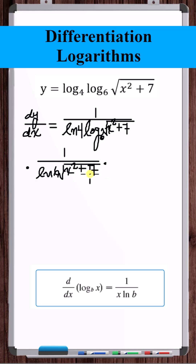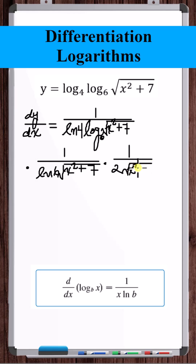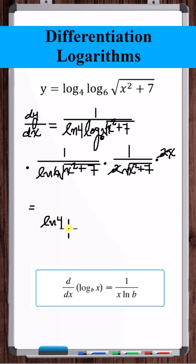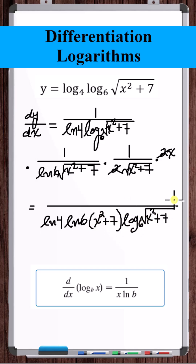Chain rule again — we have the square root of something. What is the derivative of the square root of something? It's 1 over 2 square root of that something, times the derivative of that something. The derivative of x squared plus 7 is 2x, and that's your answer.